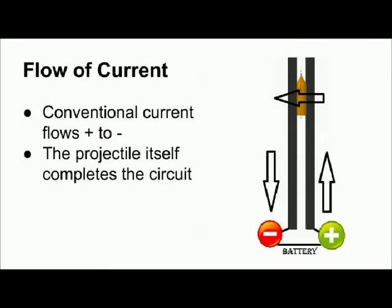In this diagram, we see that the projectile itself is completing the circuit of the battery and the rails. Although without resistance, this actually borders on a short circuit scenario. This flow of current in a circuit fashion is important for the following magnetism concepts.